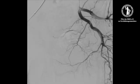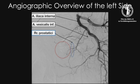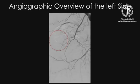Here we demonstrate the contrast between the expected theoretical vascular anatomy of the left side and the actual anatomy from the overview angiography. Highlighted in red is the tiny artery that showed to be the inferior vesical artery, and the circle shows the estimated location of the prostate.